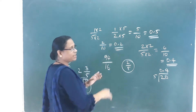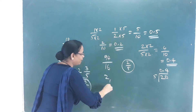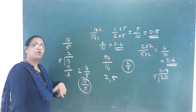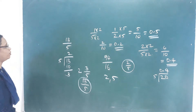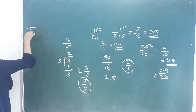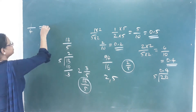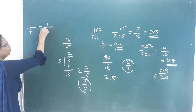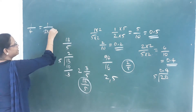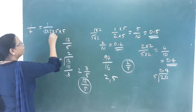We terminate at 0.2. Now we have 4 as the denominator. How do we do this? Since 4 is 2 into 2, we multiply by 5 into 5.